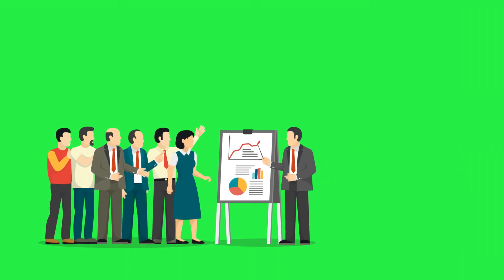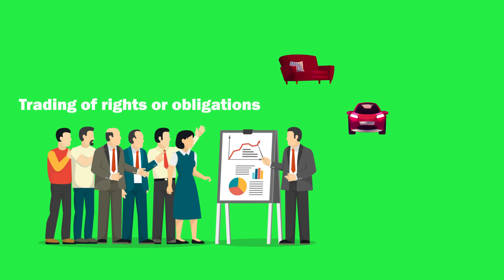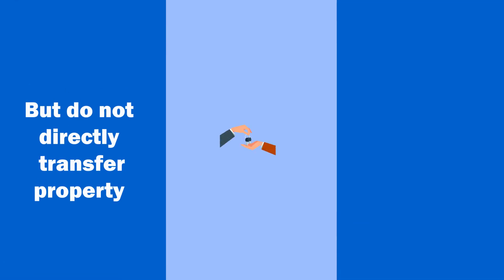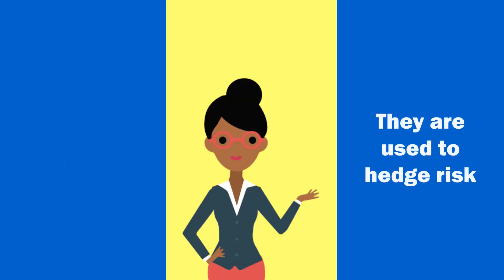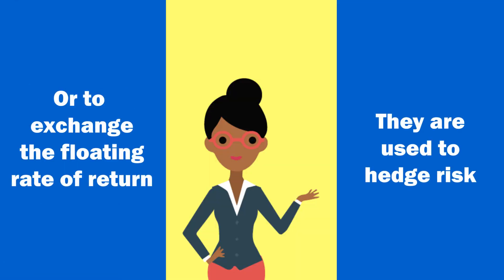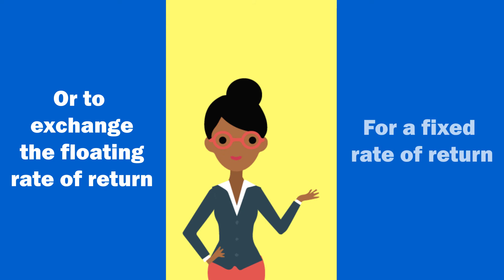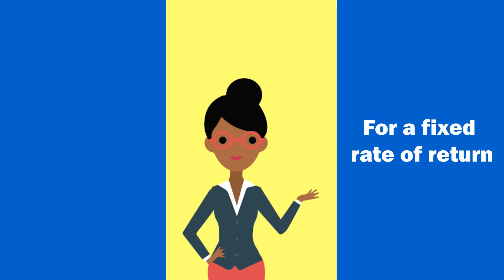Derivatives involve the trading of rights or obligations based on the underlying product and do not directly transfer property. They are used to hedge risk or to exchange a floating rate of return for a fixed rate of return.